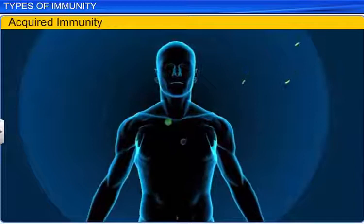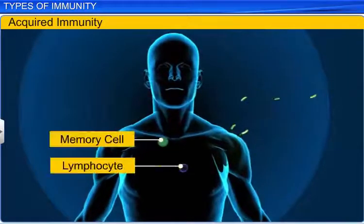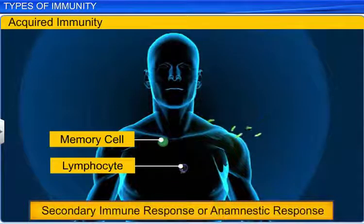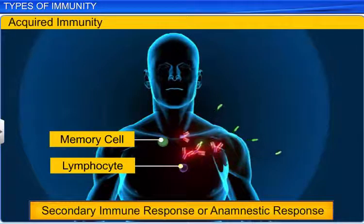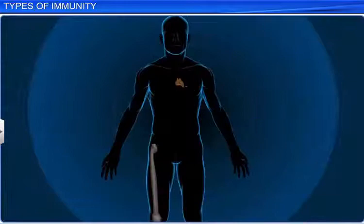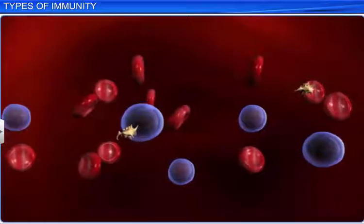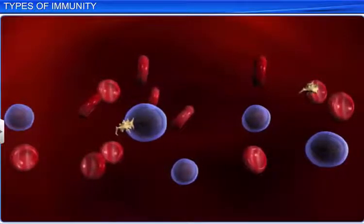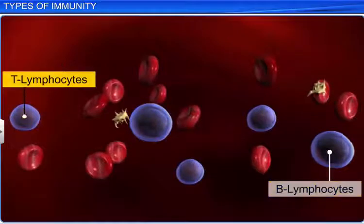However, when the same bacterium attacks again, the memory cells help to elicit a secondary immune response of high intensity. This response is also known as an anamnestic response. Both primary and secondary immune responses are made possible by two special lymphocytes in our blood: B lymphocytes and T lymphocytes respectively.